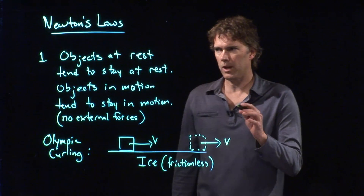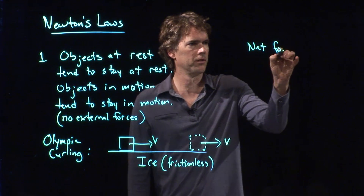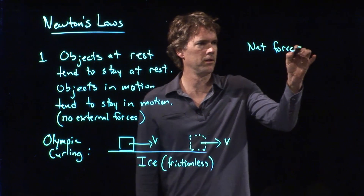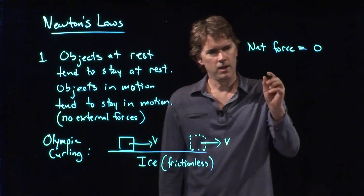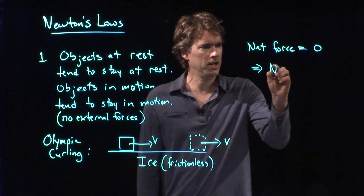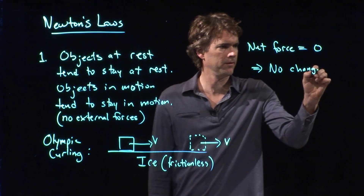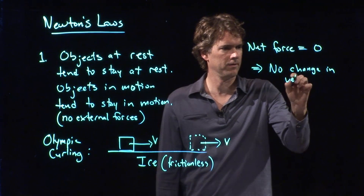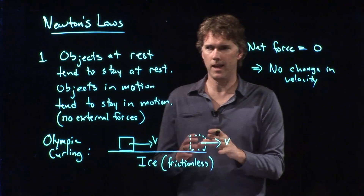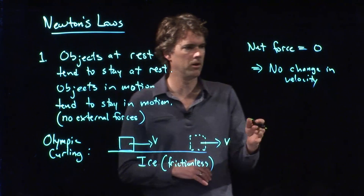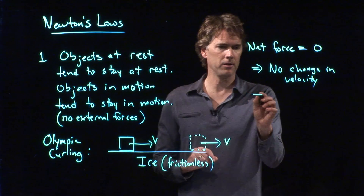One way to think about Newton's first law is this: the net force is equal to zero, and therefore there is no change in the velocity. That velocity could be zero, and at a later time it would still be zero. Or it could be some value, and at a later time it would still be that value.